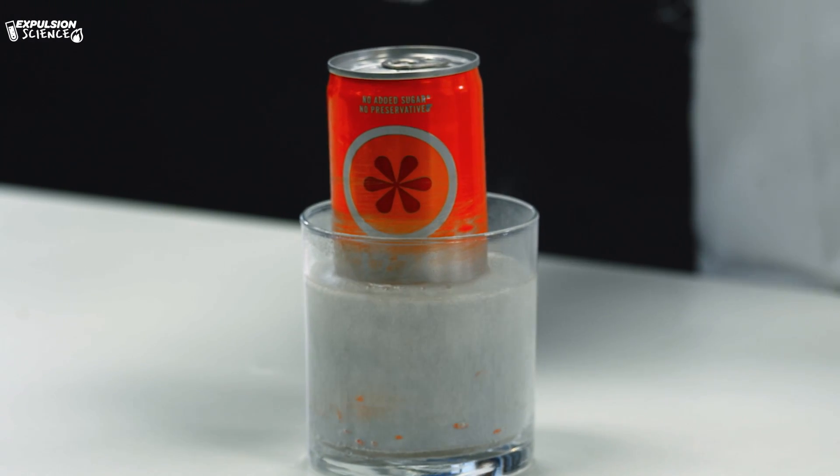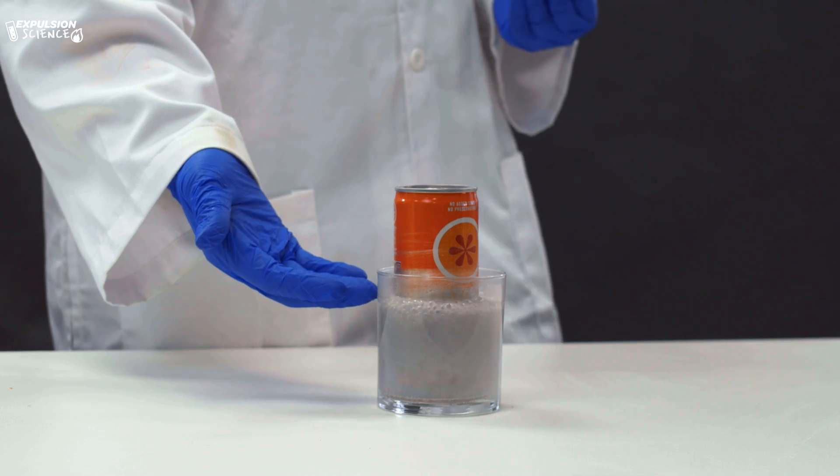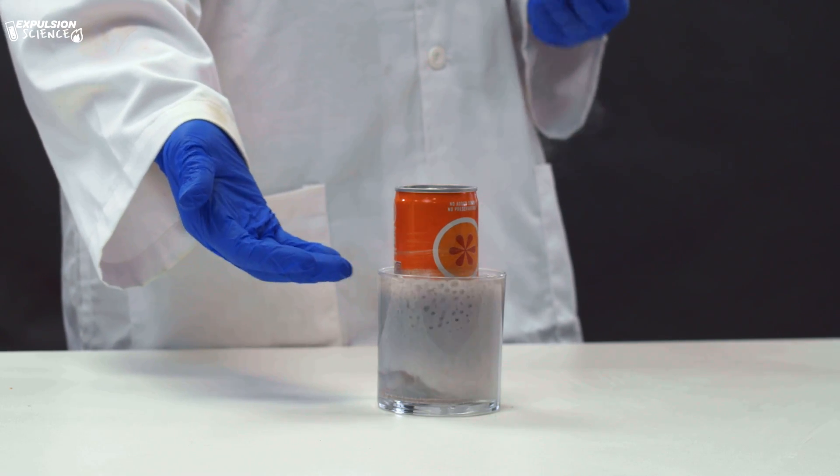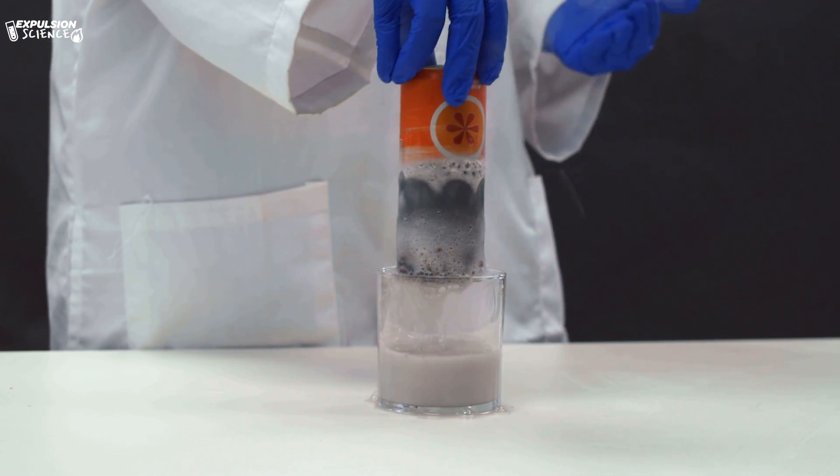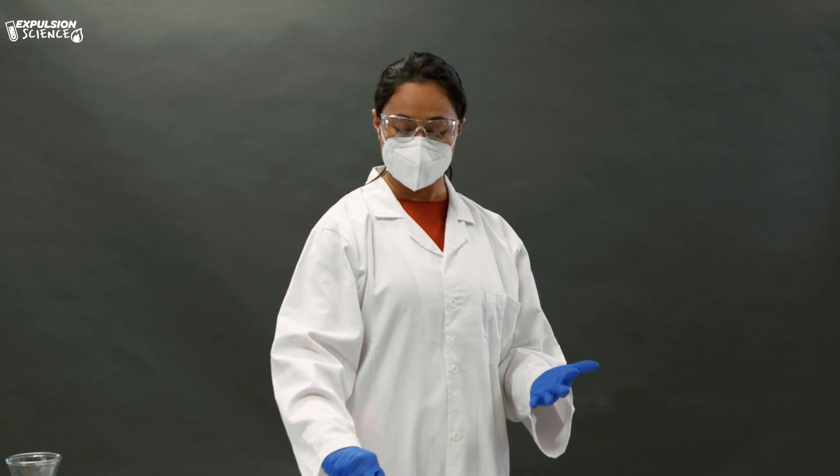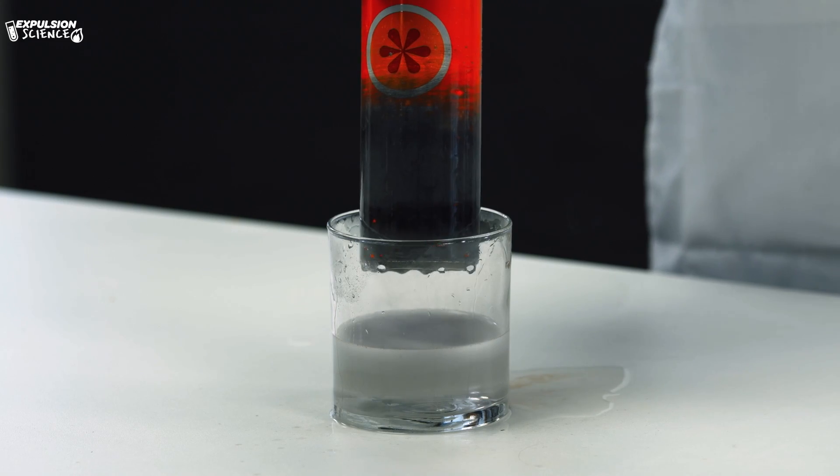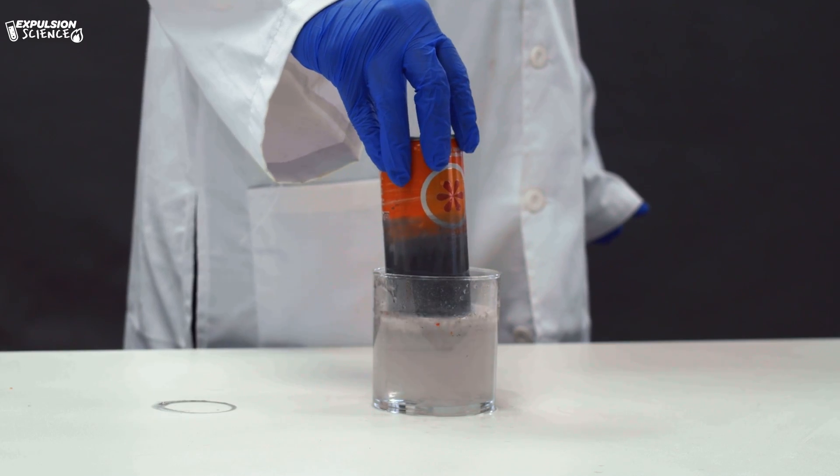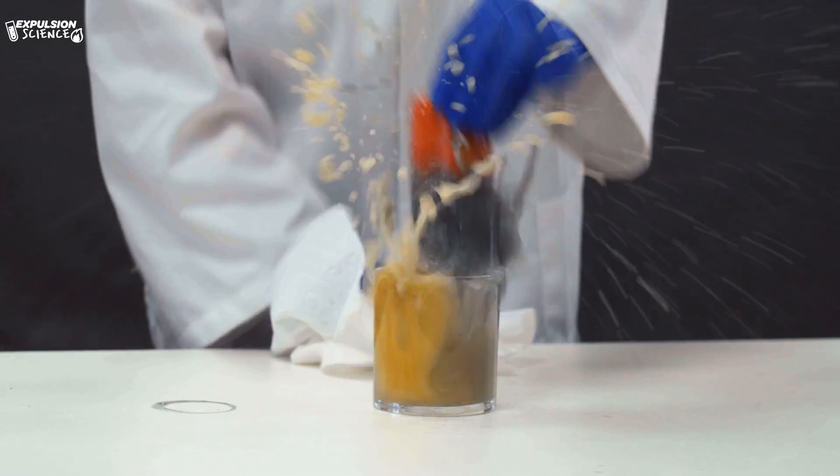So if you look closely, you can start to see this fizzing, and what's happening here is you can see hydrogen gas being produced. Now the liquid that you're seeing here is actually not going to be hydrochloric acid over time. Instead, it's going to be aluminum chloride. So we're going to continue to let this sit for a little bit. Oh my gosh!